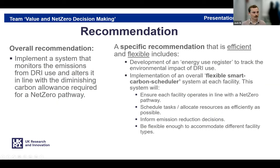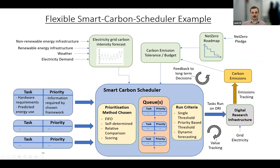The overall recommendation is to implement a system that monitors emissions from DRI use and then alters it in line with a diminishing allowance required by a net zero pathway. A specific example would be an energy use register and a flexible smart carbon scheduler system. By energy use register, what I mean is a register that keeps track of the energy use estimations of all DRI considered in scope. The key recommendation is that this would use a principle of differentiated scrutiny — applying different levels of granularity to different facilities depending on how much energy they use, to focus efforts on areas needing the most reduction.